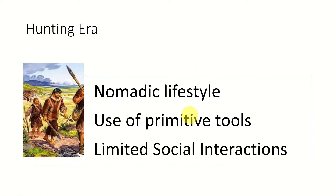The hunting era was the time where humans started deviating from other animals due to advancement of their intellectual capacity. During the hunting era we had a nomadic lifestyle and started using some primitive tools, but due to limited intellectualism and the keep-moving nature, we had limited social interactions at that time.